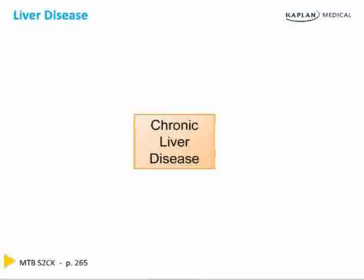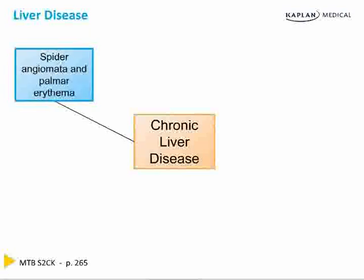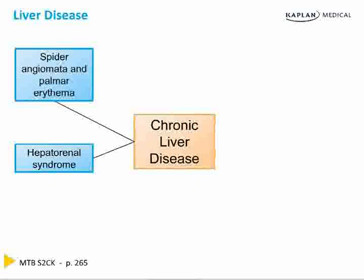Chronic liver disease has multiple complications. The first is spider angiomata and palmar erythema. The next is hepatorenal syndrome, in which a change in blood flow and blood vessel tone in the kidneys leads to renal failure.